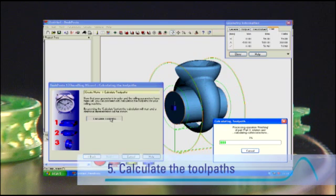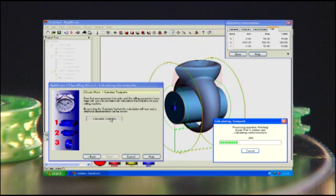After selecting the cutting bit and the degree of precision to be used, DeskProto will calculate the toolpaths for all three steps of the process.